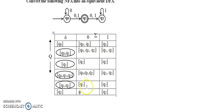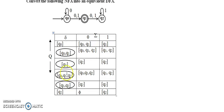For {Q1}: Q1 with 0 is Q2, and Q1 with 1 is also Q2. For {Q0, Q1, Q2} with 0: delta(Q0, 0) ∪ delta(Q1, 0) ∪ delta(Q2, 0) = {Q0, Q1} ∪ {Q2} ∪ ∅ = {Q0, Q1, Q2} — this is an old state, so I will not repeat it. For {Q0, Q1, Q2} with 1: delta(Q0, 1) ∪ delta(Q1, 1) ∪ delta(Q2, 1). For {Q1, Q2} with 0: delta(Q1, 0) ∪ delta(Q2, 0) = Q2. For {Q1, Q2} with 1: delta(Q1, 1) ∪ delta(Q2, 1) = Q2 ∪ Q2 = {Q2}.